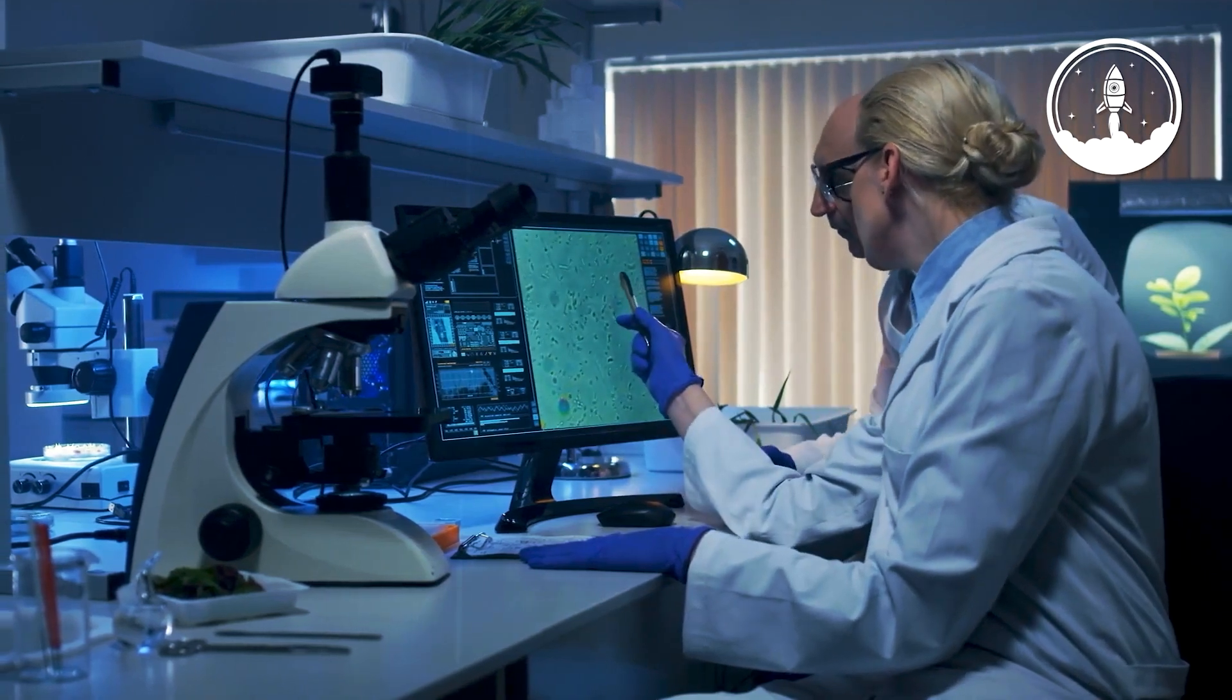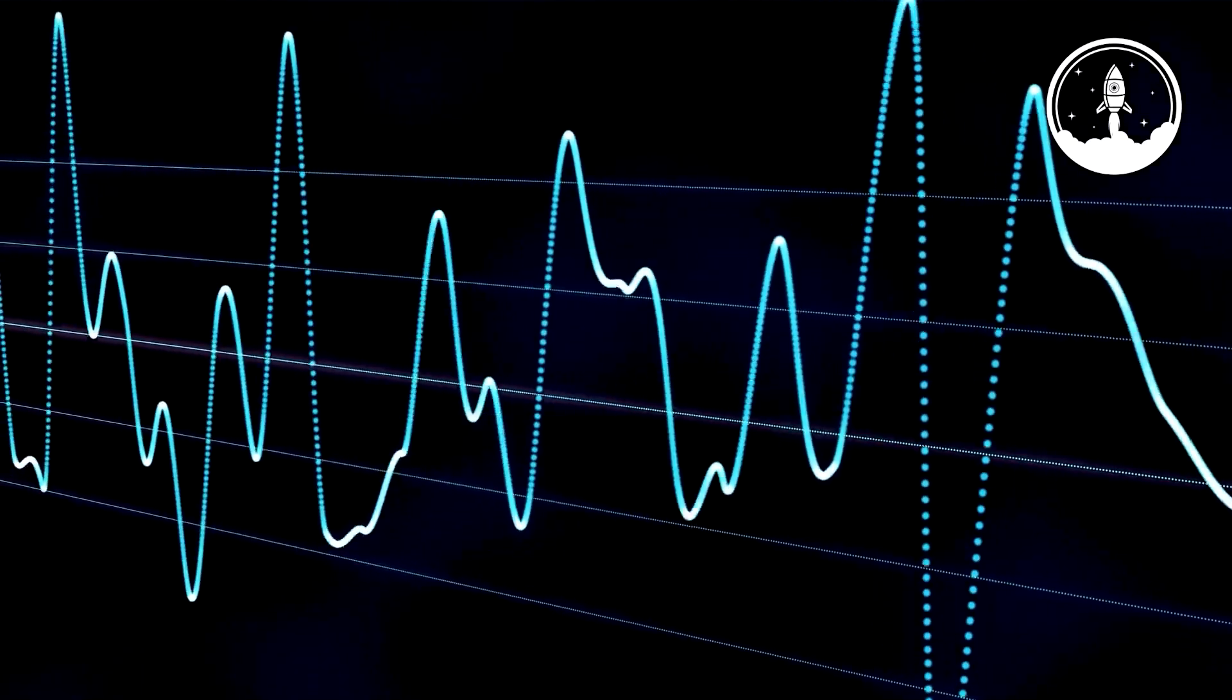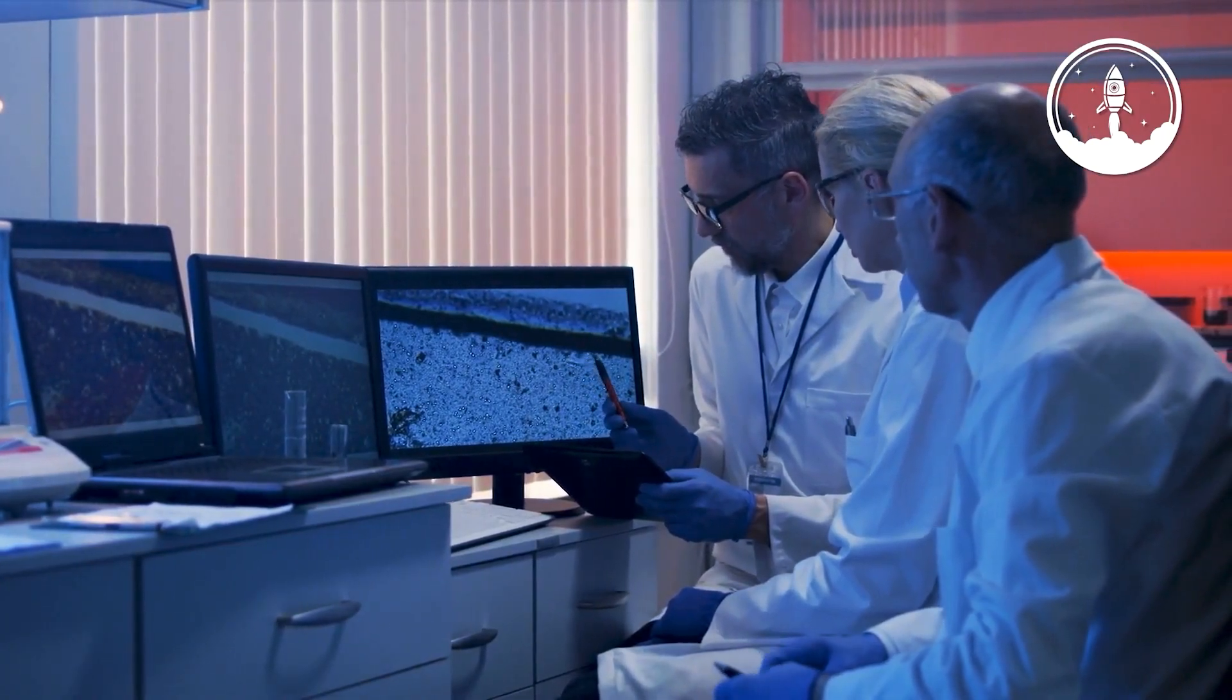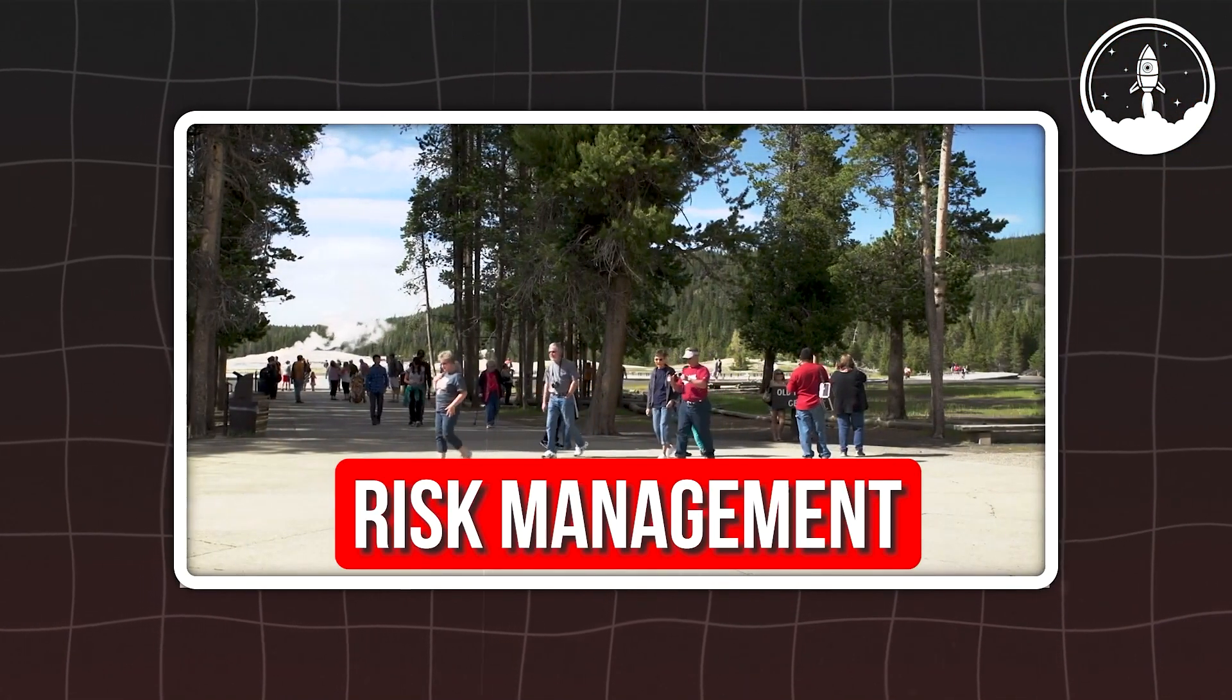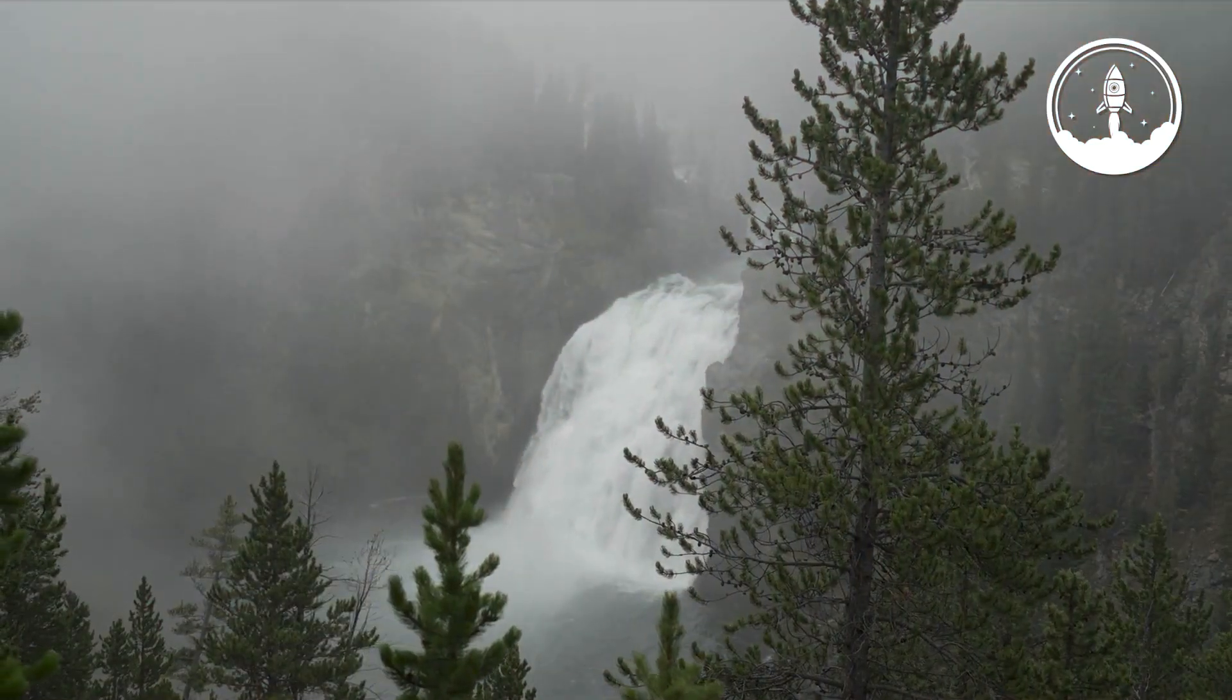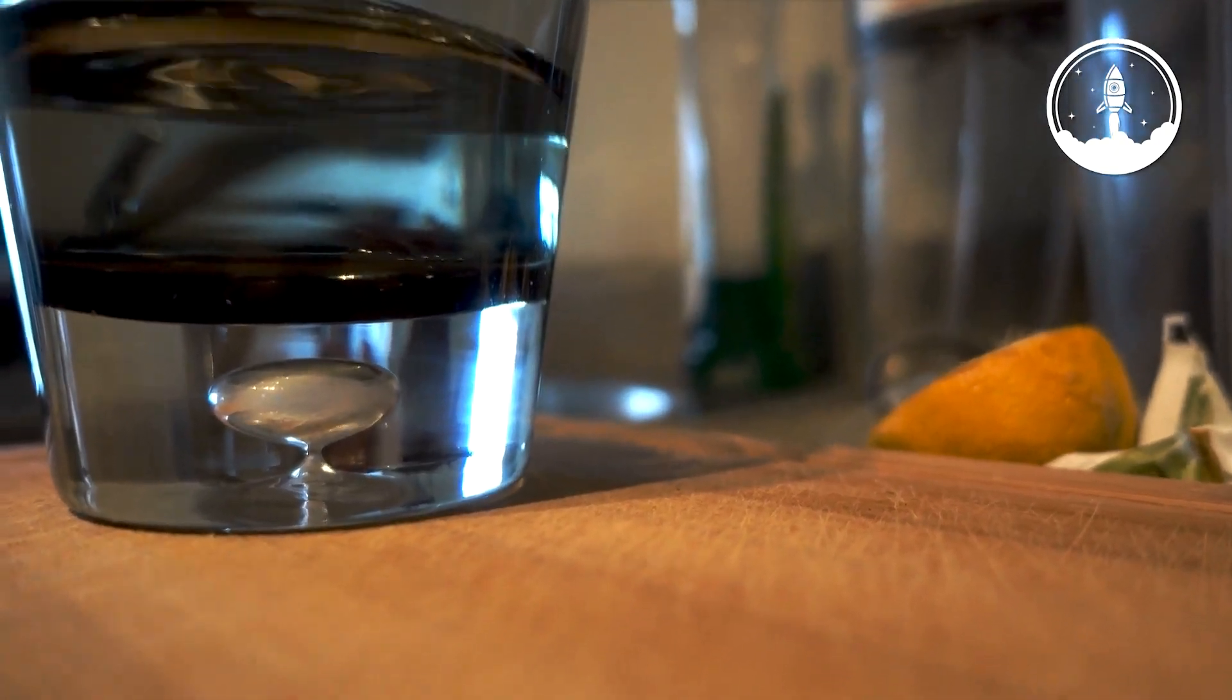These subterranean sounds aren't just a curiosity - they're a new tool for understanding Yellowstone's hidden systems. By tracking these low-frequency vibrations, scientists can spot changes in the hydrothermal network before anything is visible on the surface. That early notice can help manage risks for visitors, protect infrastructure like boardwalks and roads, and give park staff time to respond to sudden changes. For researchers, it's also a rare chance to map the underground plumbing in a way that complements seismic, thermal, and gas monitoring.